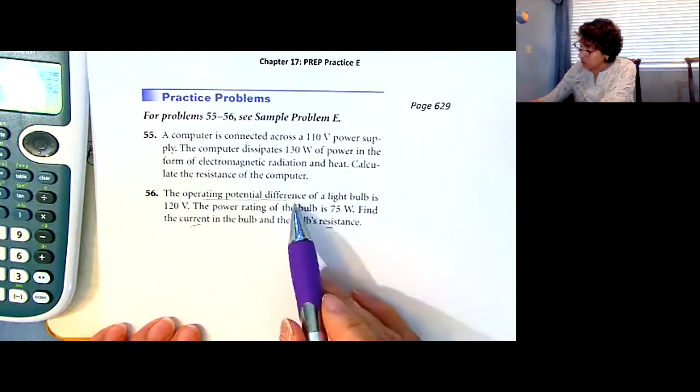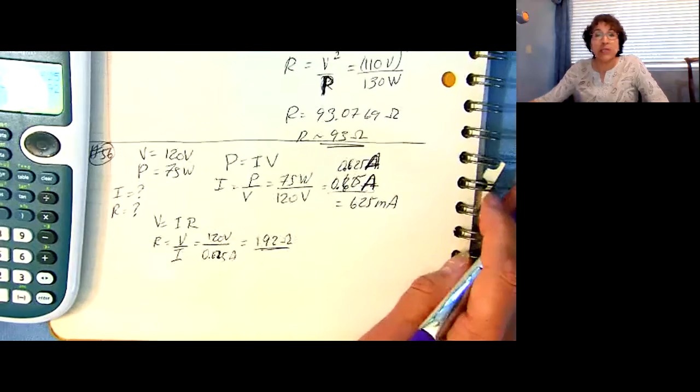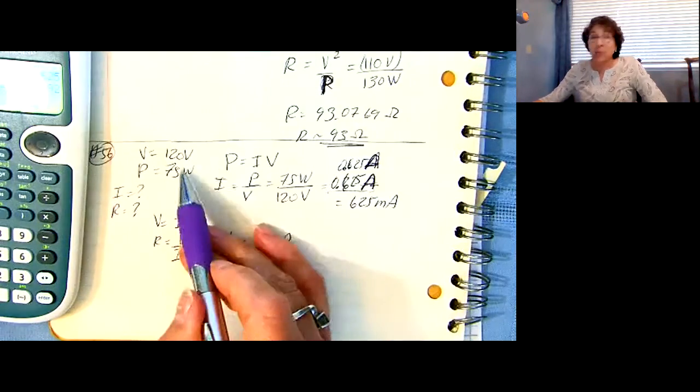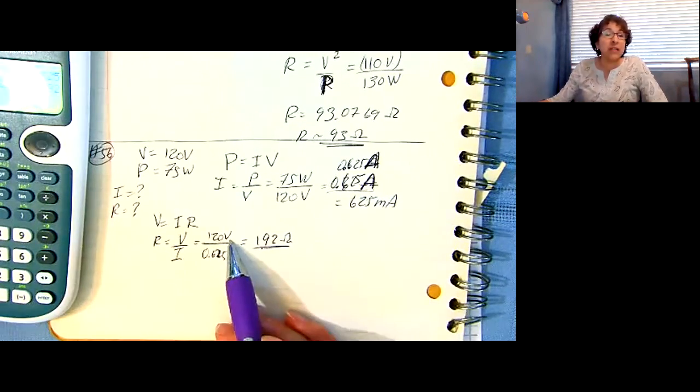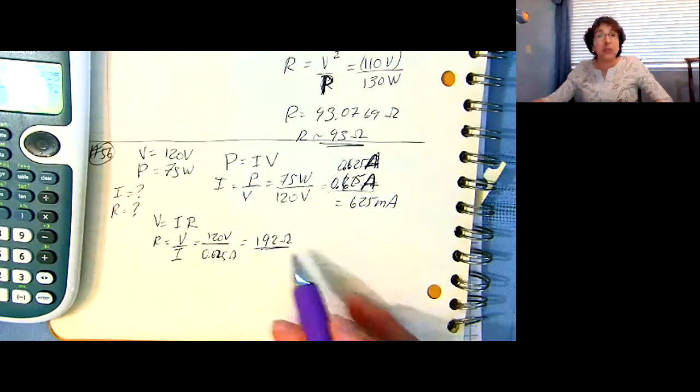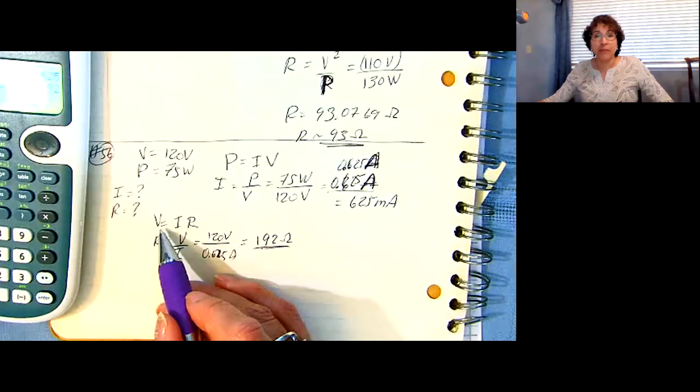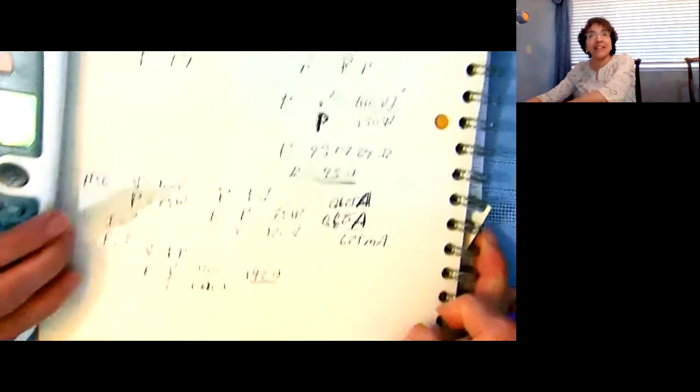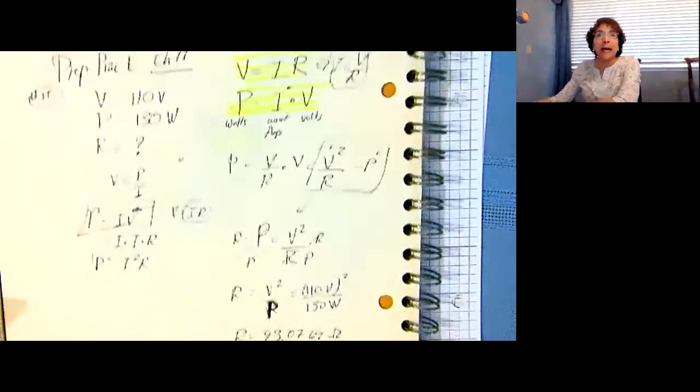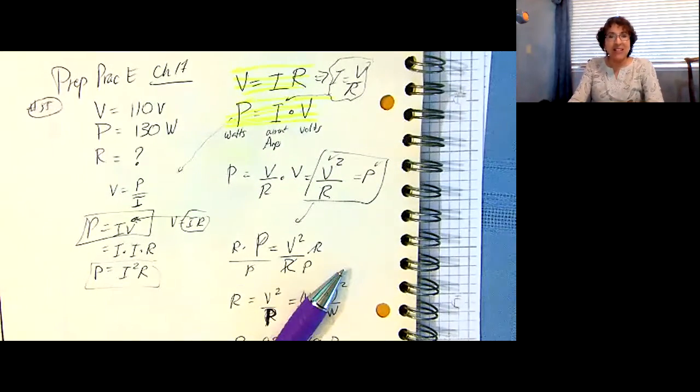So notice how here, they gave us the voltage and the power. Sometimes you hear the word wattage, for how much watts. From there, I figured out what the current was, and they wanted to know the resistance, so I use this one. Yes, you can use all those other versions, if you wanted to go directly to the resistance. There's always more than one way to solve the problem. Bottom line, V equals IR, and P equals IV. That's all we have, and I'll see you next time.